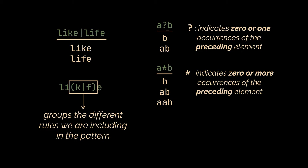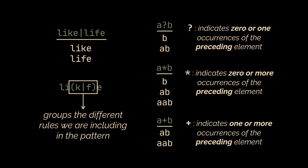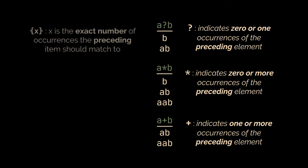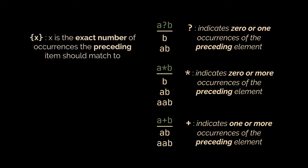And the plus sign indicates one or more occurrences of the preceding elements. So A plus B matches AB, AAB, and so on, but not B. Then we have the curly brackets. The number you define inside the curly brackets is the exact number of occurrences the preceding item should match to.